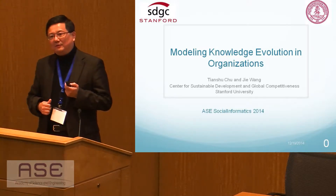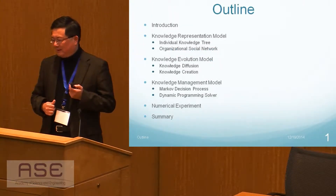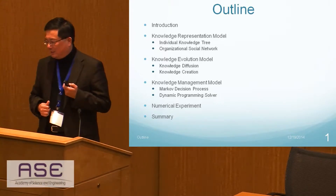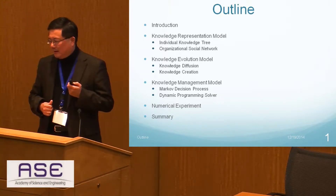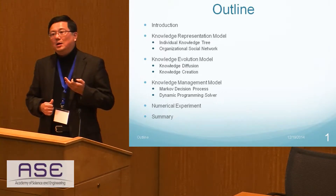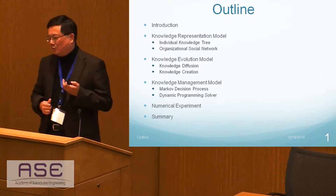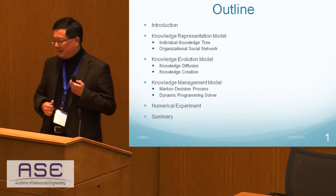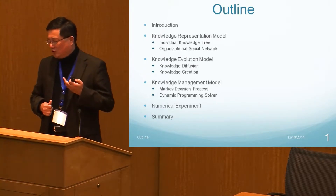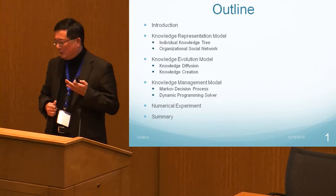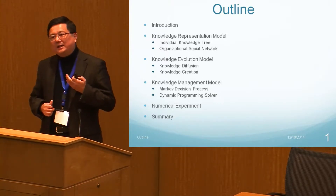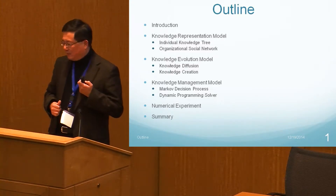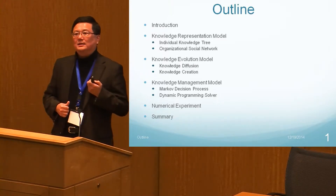First we will give a short introduction, then provide a knowledge representation model at the individual level and at the organizational social network level. Next we will talk about knowledge evolution — which means two things: diffusion and creation. Then we describe the knowledge evolution model, talk about how to optimally manage knowledge evolution inside the organization, provide some numerical examples, and finally give a summarization.